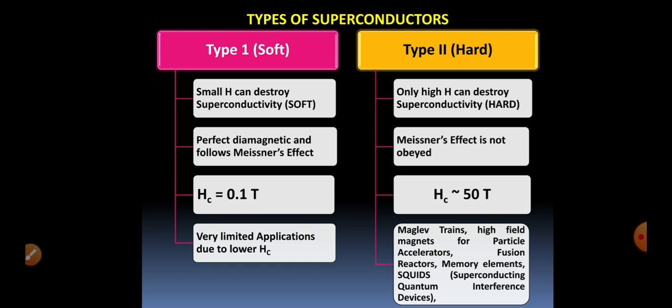Type 2 superconductors are called hard superconductors because a very high magnetic field value is required to destroy their superconductivity. In hard superconductors, the Meissner effect is not followed. Their critical magnetic field is very high — about 50 Tesla. Only this much value can destroy their superconductivity. Due to the high value of the critical magnetic field, Type 2 superconductors have many applications, such as maglev trains, high-field magnets, particle accelerators, fusion reactors, memory elements, and SQUIDs — Superconducting Quantum Interference Devices.